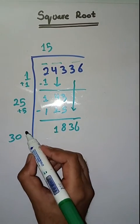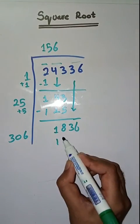Here we'll do 25 plus 5 which is equal to 30. So, we will take a number 6. 306 times 6 is 1836.